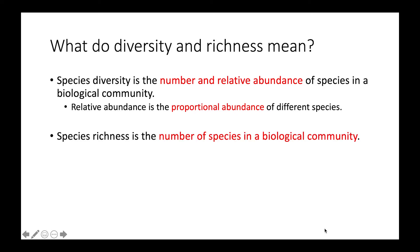Another term is species richness, which is simply the number of species in a biological community. It has nothing to do with their relative abundance — it's purely based on how many different kinds of species are found within the community.